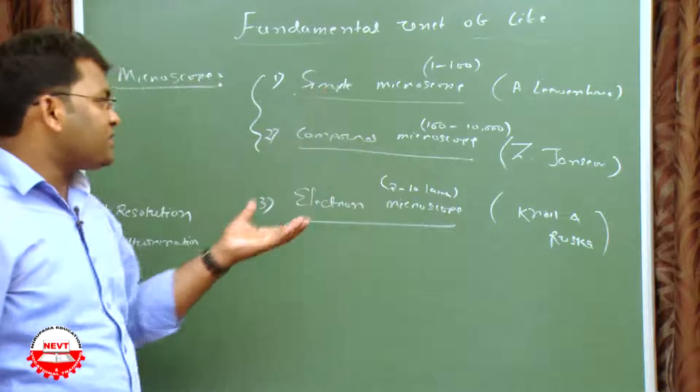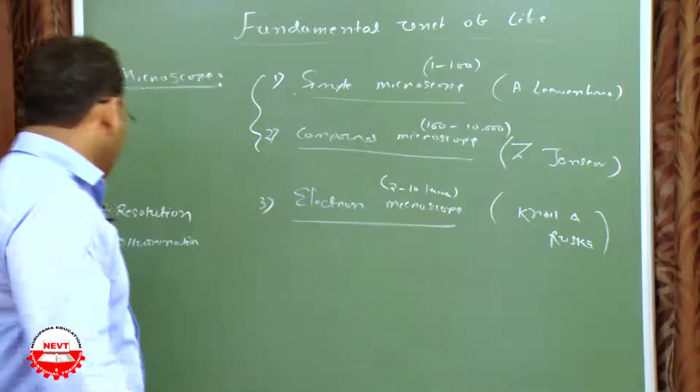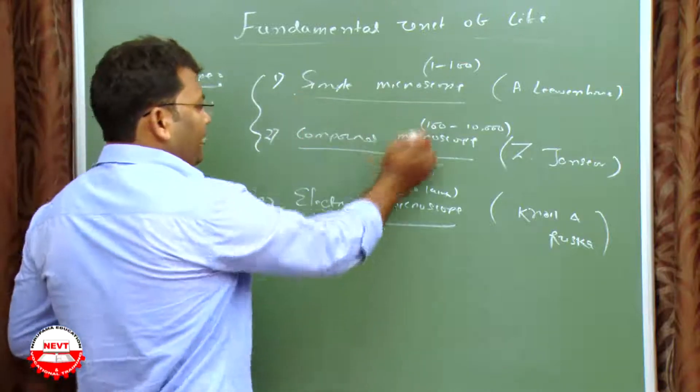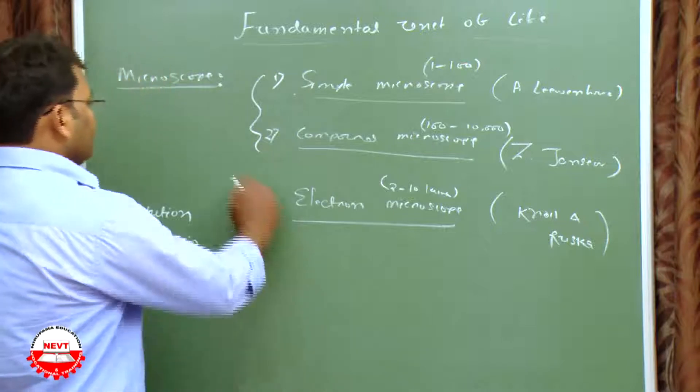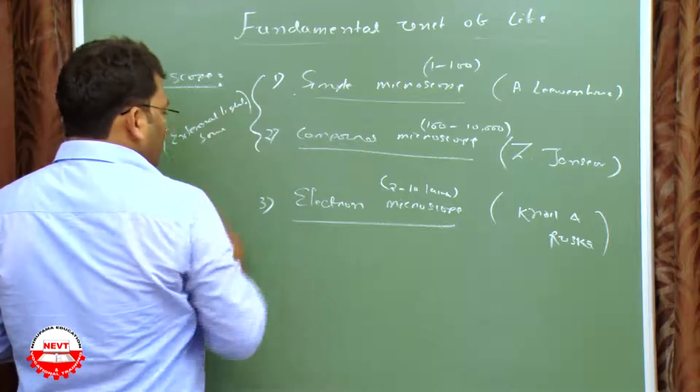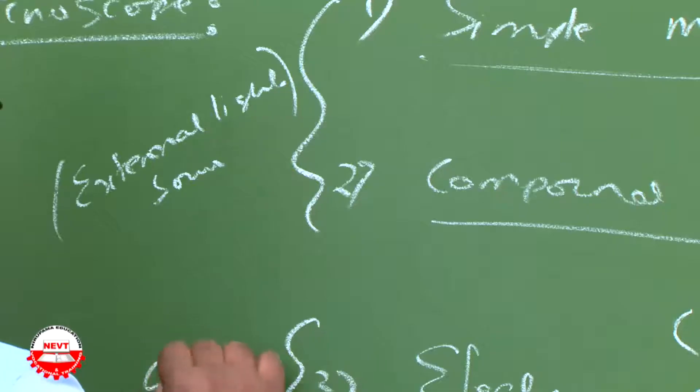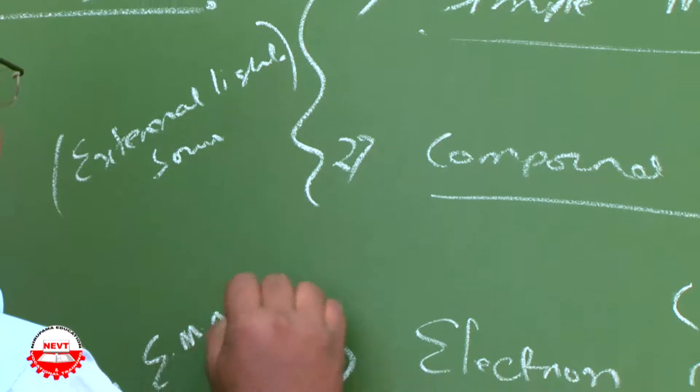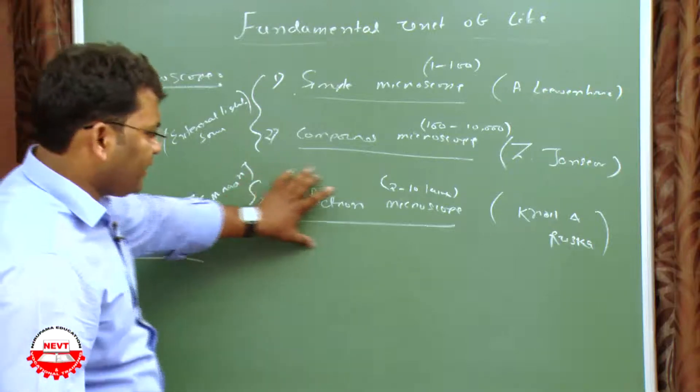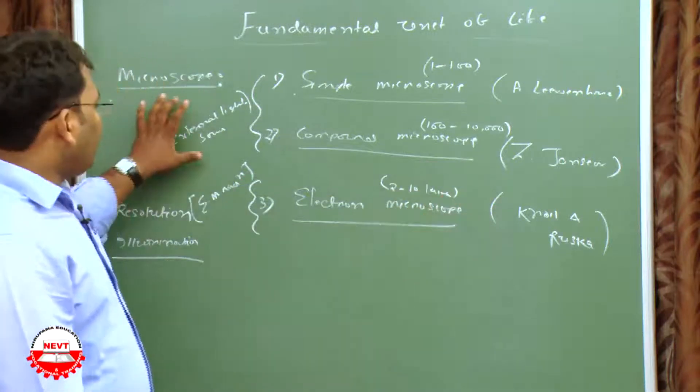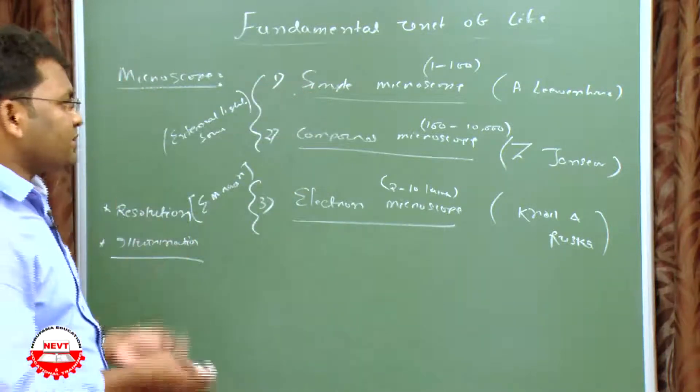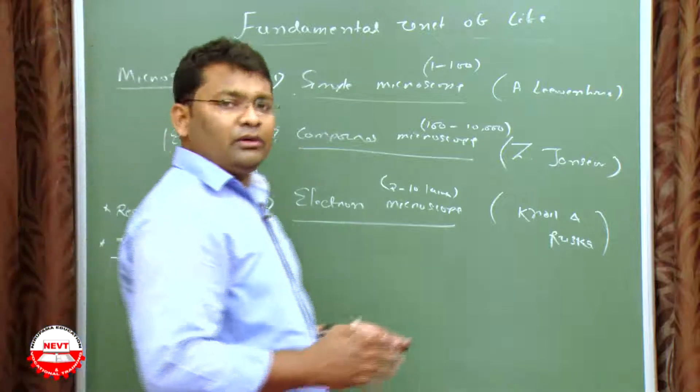So what about illumination, means the source of light? The simple and compound microscope depend on external light source, but electron microscope depends on electromagnetic radiation. The source of light or the illumination source is electromagnetic radiation for electron microscope and external light sources for simple and compound microscope. This is about our microscope concept.